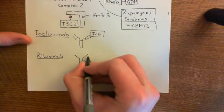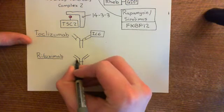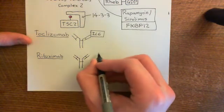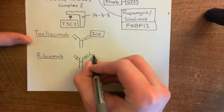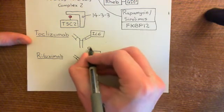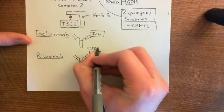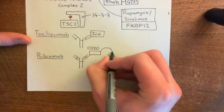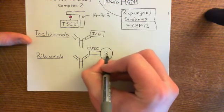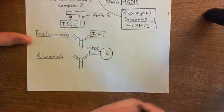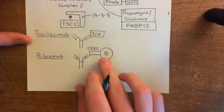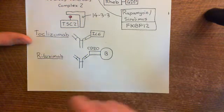CD20 is a protein that is often used as a B-cell marker because CD20 is on the surface of B-cells. So let me show this here. This protein here is a CD20 protein, standing for cluster of differentiation 20. It's on the surface of B-cells and also B-cell derivatives such as plasmablasts and plasma cells.